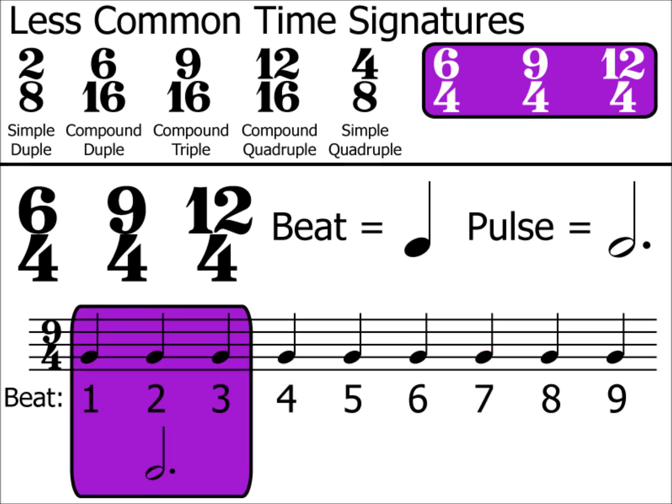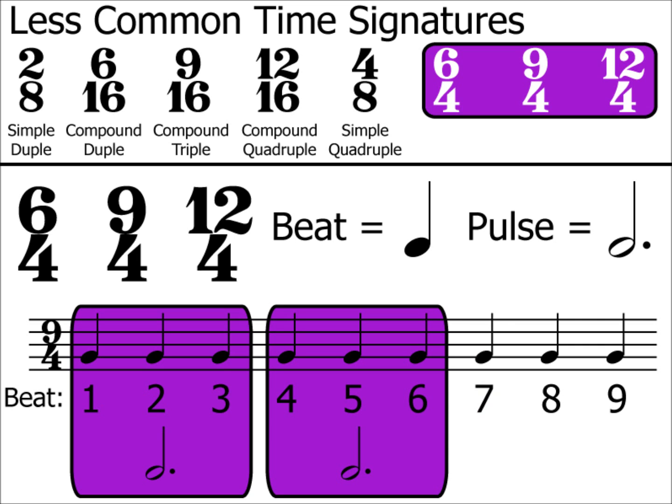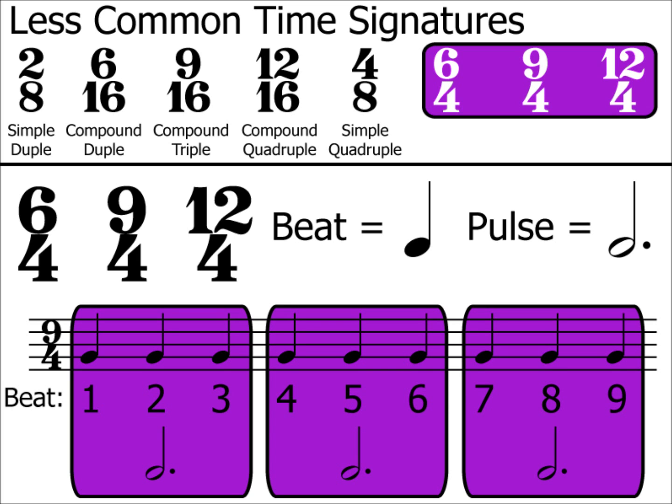Counting through: 1, 2, 3, 4, 5, 6, 7, 8, 9. This means that the first pulse lasts for the duration of beats 1, 2 and 3 — three beats equaling a dotted minim. Beats 4, 5, 6 is the second pulse, and beats 7, 8, 9 are the third pulse.